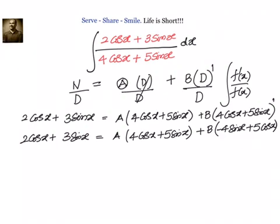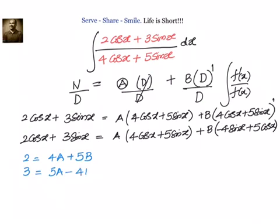Now let us compare the cos x and sin x terms on both the left hand side and right hand side. When we compare cos x terms we have 2 equal to 4A plus 5B, and when we compare sin x terms we have 3 equal to 5A minus 4B.